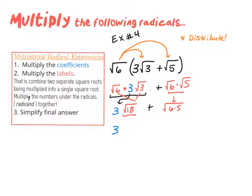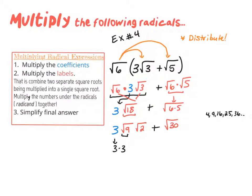Instead of √18, we rewrite it as √9 times √2, and there's a plus sign, then √30. The square root of 30 doesn't simplify — perfect squares like 4, 9, 16, 25 don't go into 30. So we simplify only √9 to 3, giving us 3 times 3√2, which is 9√2. Our final answer is 9√2 + √30.